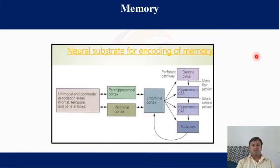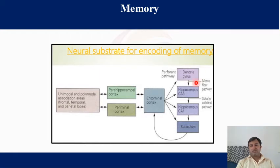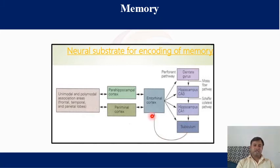This is the hippocampus area showing the path of memory. Information enters the parahippocampal cortex and passes into the entorhinal cortex, then to the dentate gyrus, then into the hippocampus CA3 region via the mossy fiber pathway, from CA3 to CA1 via the Schaffer collateral pathway, then into the subiculum, and back through the entorhinal cortex and perirhinal cortex.